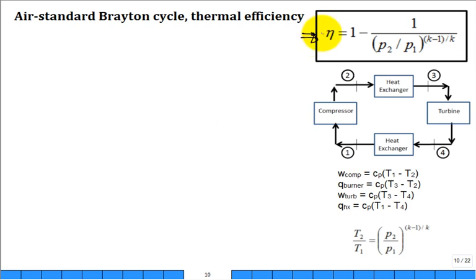I'll show you the derivation of this simple equation for the thermal efficiency of the air standard Brayton cycle. It's not that hard. So we have the thermal efficiency is going to be work net divided by Q in, Q in in the burner.